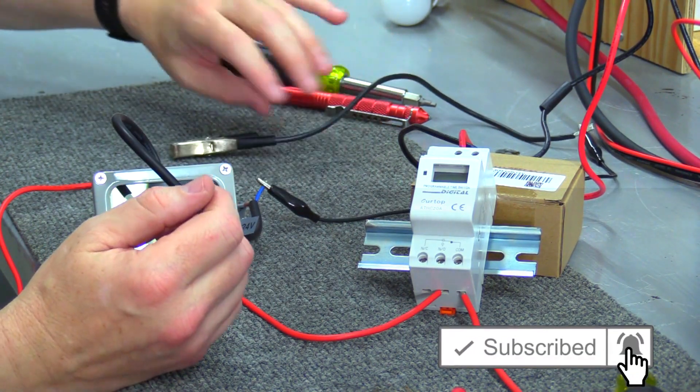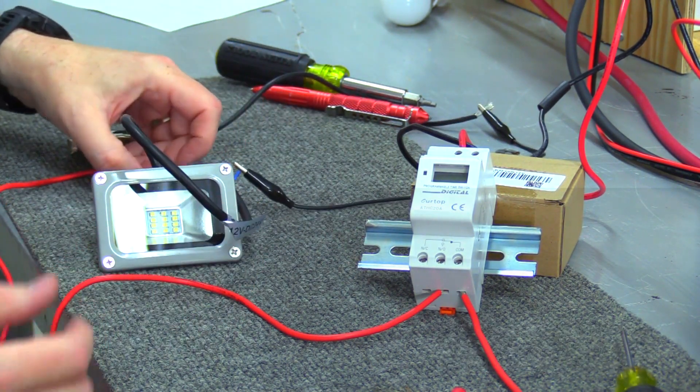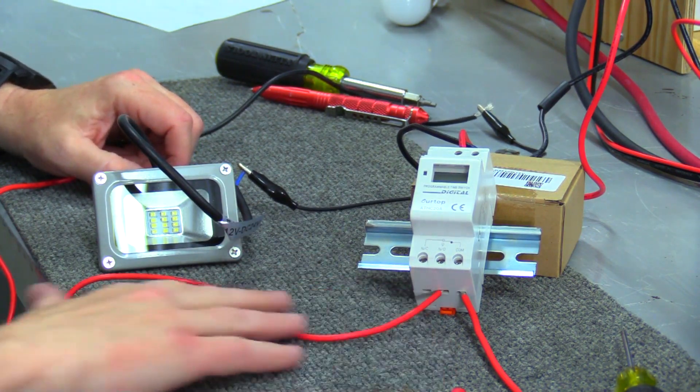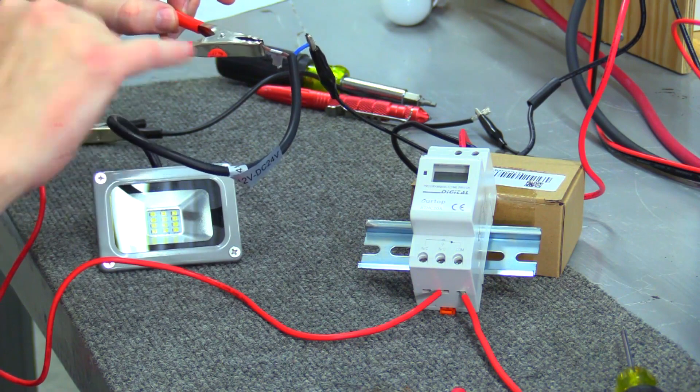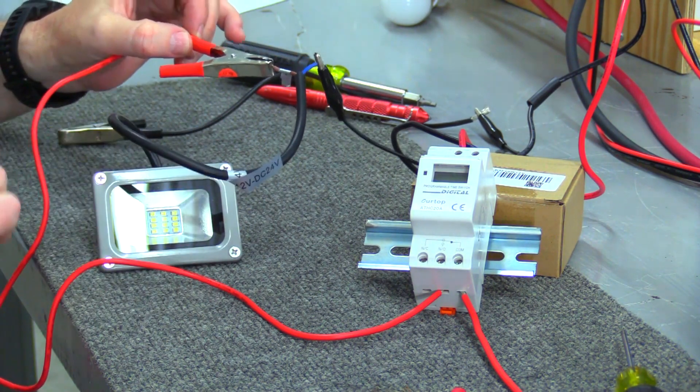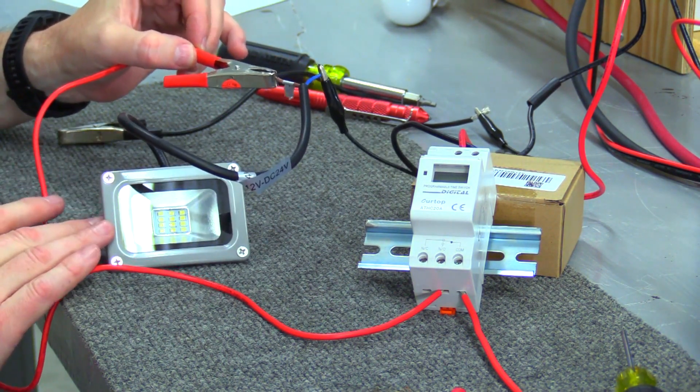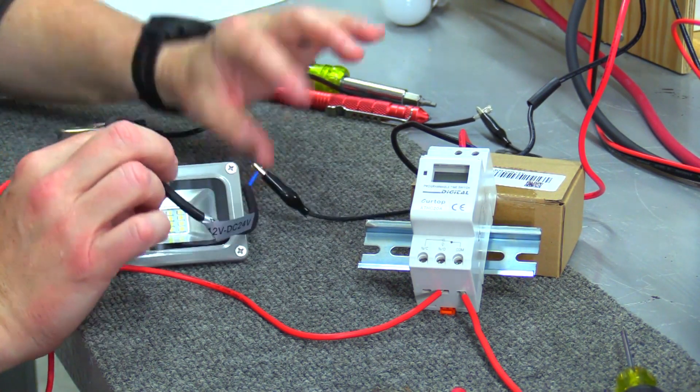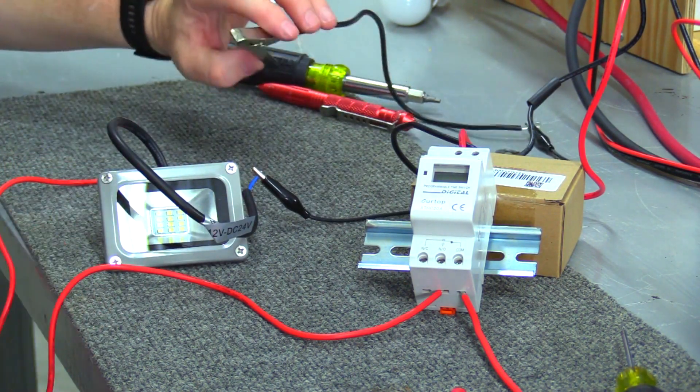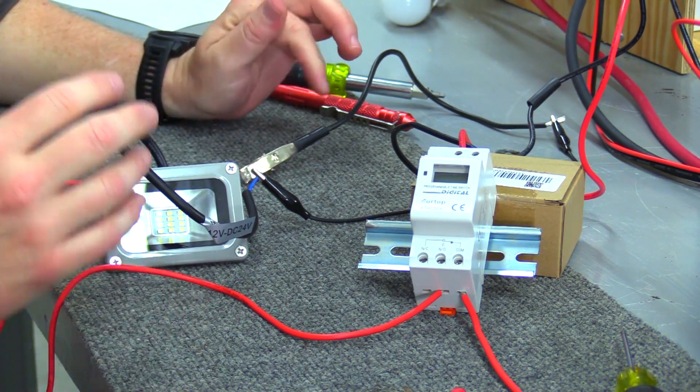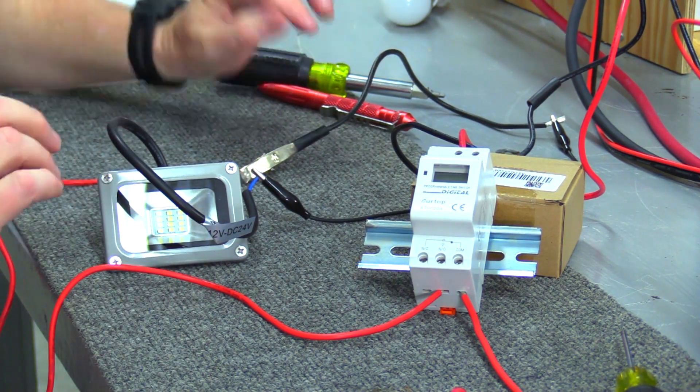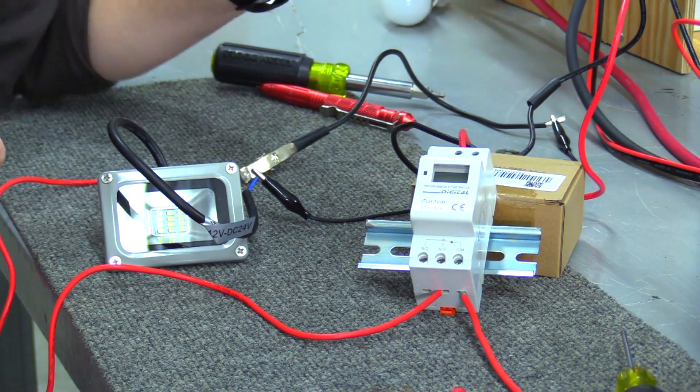And then my normally open, we've got another hot wire over here. It's just run into the positive on my device, and in this case, it's this LED flood. And then my negative on my LED flood is sitting right here. And we're going to put that back on the battery. So your negative side is just basically running over here like that.